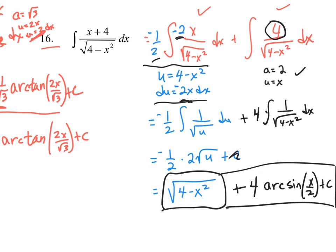You only need one C because you can combine constants. This has been inverse trig — finding the derivatives and the antiderivatives. Thanks for listening, and have a great day.